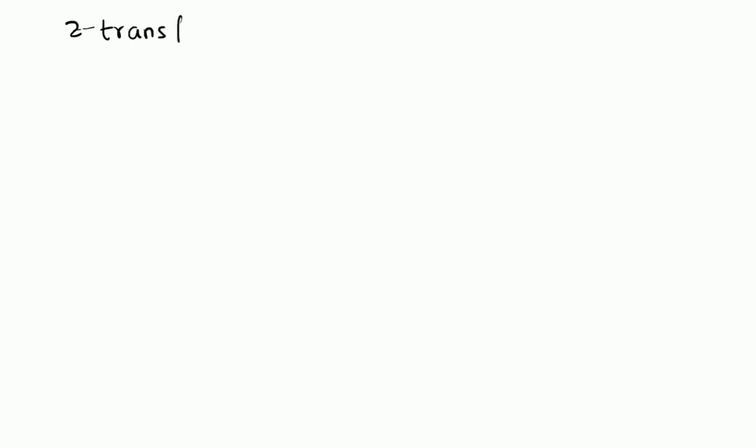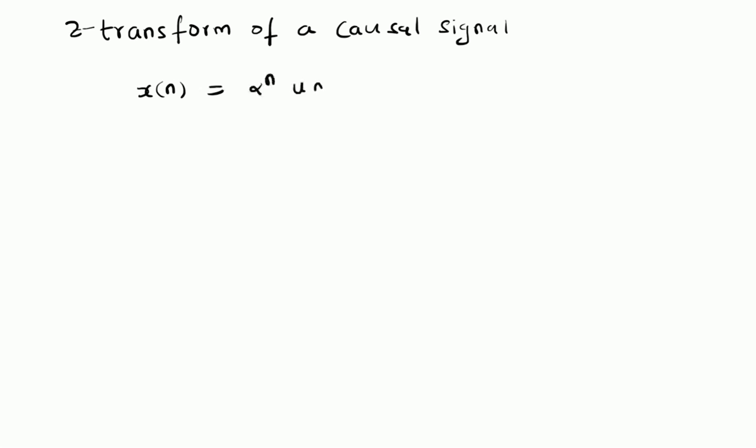Hello, welcome. In this short video we will look at the Z-transform of a causal signal. Specifically, we look at x(n) = α^n · u(n), which is a causal signal.